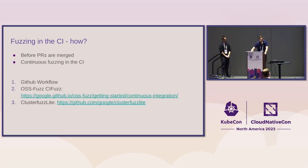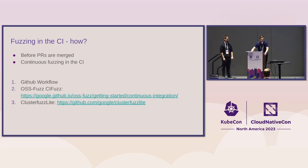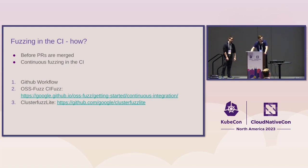A good way to run fuzzers in the CI is either in PRs before they are merged, or you can do it continuously in the CI with a project like ClusterFuzz Lite, which is a fuzzing framework that automates a lot of steps and runs continuously in your CI. Or, if you have a project integrated into OSS-Fuzz, you can use CI Fuzz, which is basically a GitHub Action you add to your GitHub workflows folder.